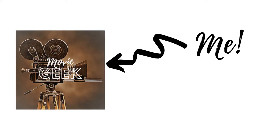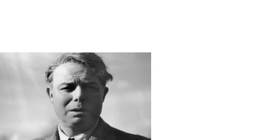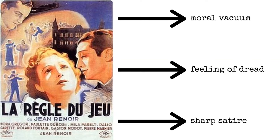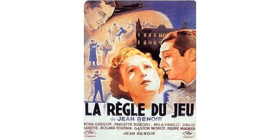Greetings lovely people of the internet. I'm Movie Geek and I make video essays every other Monday. In this video I will attempt to analyse how Jean Renoir uses extremely sophisticated cinematography in his 1939 movie The Rules of the Game to create the image of a moral vacuum, a feeling of dread and sharp satire not only of 1930s France but of the human condition.